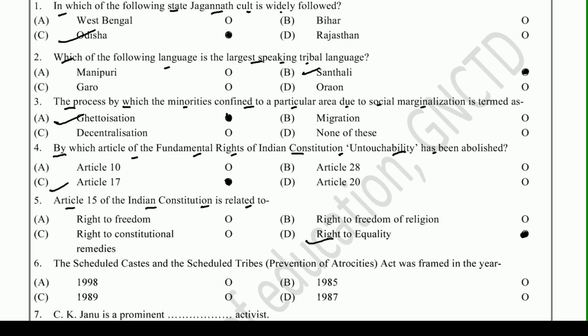Question number six: The Scheduled Castes and Scheduled Tribes (Prevention of Atrocities) Act was framed in the year — options are 1998, 1985, 1989, or 1987. The right answer is 1989.